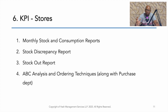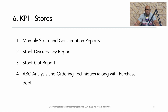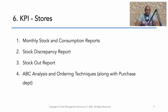In stores, KPIs can be a monthly consumption report, monthly stock report, and whether stock is according to plan or showing a big deviation. Stock discrepancy — the difference between physical stock, book stock, and system stock — is a good KPI. A stockout report, done in collaboration with the purchase department, is also useful. Additionally, whether the stores department is preparing an ABC analysis — identifying critical components based on consumption value (unit price multiplied by number of pieces consumed) and using that classification to set ordering techniques — is a good measure for the stores department.